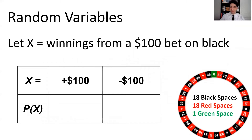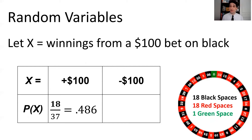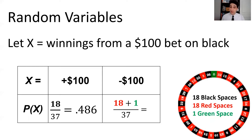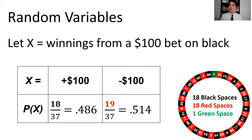X, the random variable, can take on two values: either we win the $100 we bet, or we lose the $100 we bet. The probability that we win is the probability the ball lands on one of the 18 black squares out of 37 total spaces, which is about 48.6%. The probability we lose is the 18 red spaces plus that one pesky green space divided by 37 — that's 19 out of 37, a 51.4% chance.